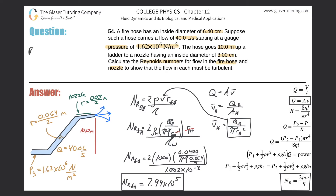We know that when the Reynolds number is greater than about 3,000 the flow is considered turbulent — some texts use 4,000. If it's less than 2,000, the flow is considered laminar. Our result of about 794,000 is well above that threshold, so the flow in the fire hose is clearly turbulent. Now we'll do the same calculation for the nozzle.